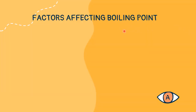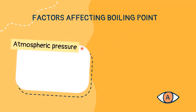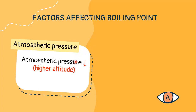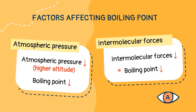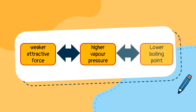The boiling point of a liquid is affected by two factors. First, it is directly affected by atmospheric pressure — the pressure exerted by the weight of air molecules above the liquid. When atmospheric pressure is lower, such as at higher altitude, it takes less energy to bring the water to the boiling point, meaning water will boil at a lower temperature at a higher altitude. The second factor is intermolecular forces. Weaker intermolecular forces means less energy is needed to overcome them, hence the boiling point will be lower as well. In short, liquids that have weaker intermolecular forces will have higher vapor pressure and lower boiling point.